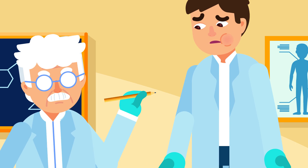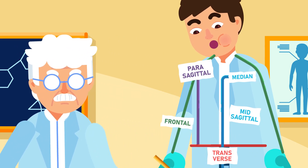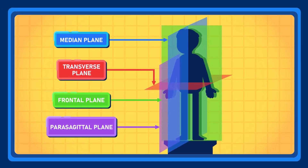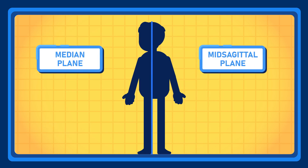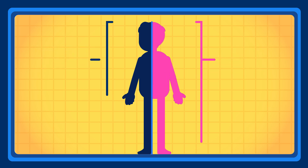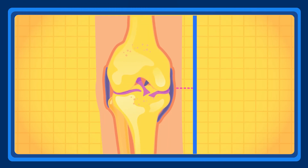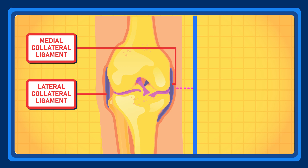After establishing the standard positions, we need to know the planes that are used to divide the body and the terms to describe the position of an object on the body. The median plane, also called the mid-sagittal plane, is a vertical plane that passes straight through the centre of the body in a longitudinal direction. It divides the body into equal right and left halves. Structures that are near the plane are referred to as medial, whereas structures that are further away from the median plane are called lateral.